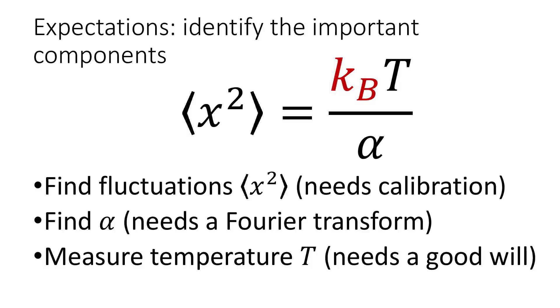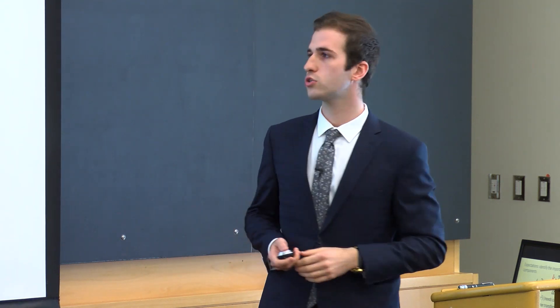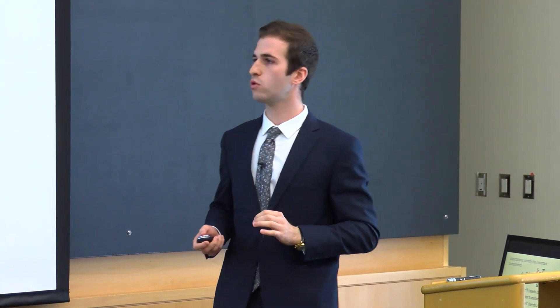All right so let's figure out what we want to do with this lab. We have the equipartition theorem and essentially we have three components that we would like to measure in order to extract Kb. We need to find the fluctuations which I just presented to you. We need to find the stiffness coefficient alpha which is related to the spring constant of motion and then we need to measure the temperature T.